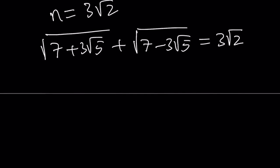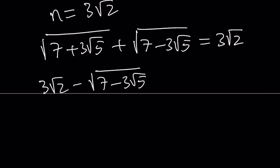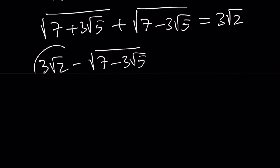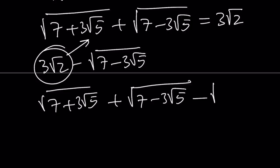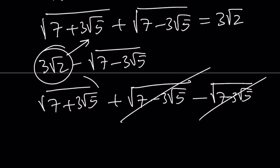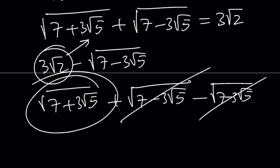The original problem asks for 3 root 2 minus the square root of 7 minus 3 root 5. We can replace 3 root 2 with what it equals: square root of 7 plus 3 root 5 plus square root of 7 minus 3 root 5. Then subtracting the square root of 7 minus 3 root 5, those two terms cancel, and we end up with the answer: square root of 7 plus 3 root 5.